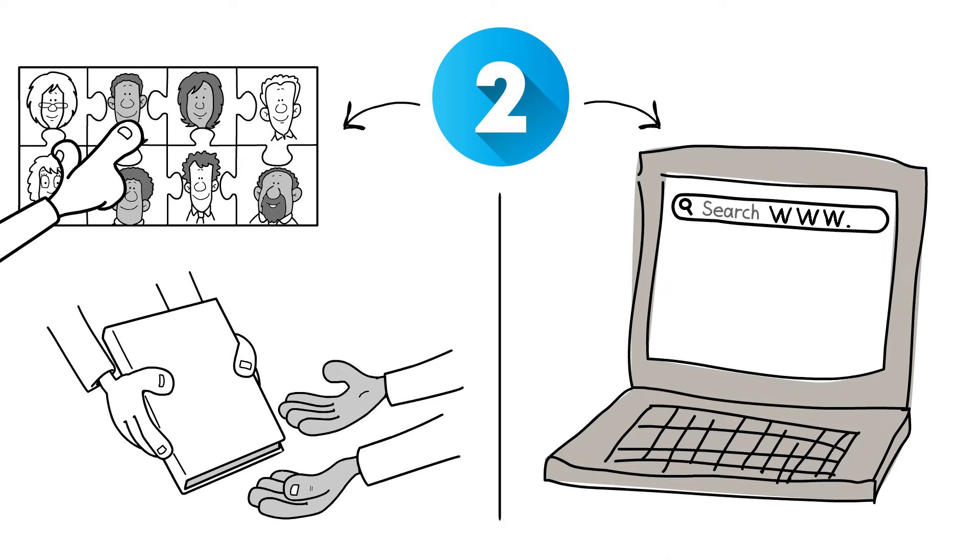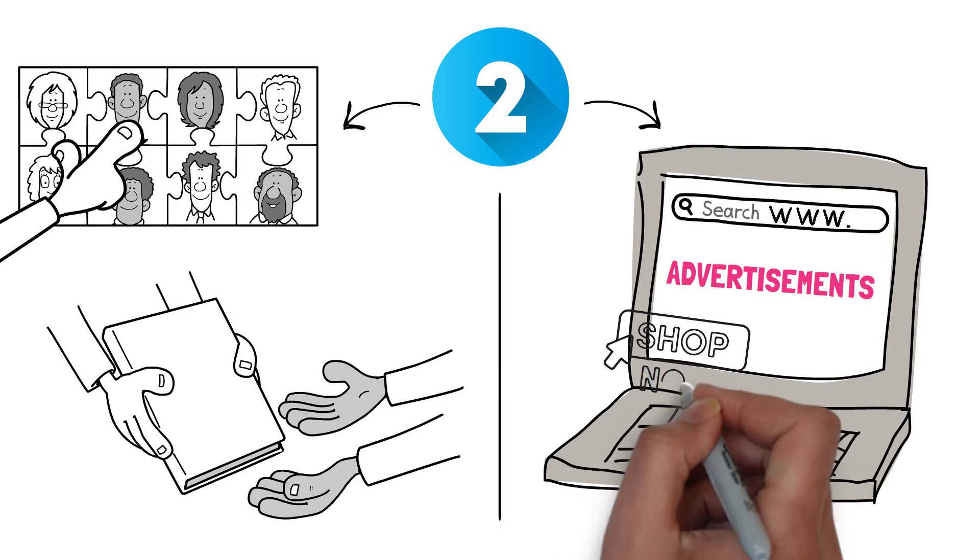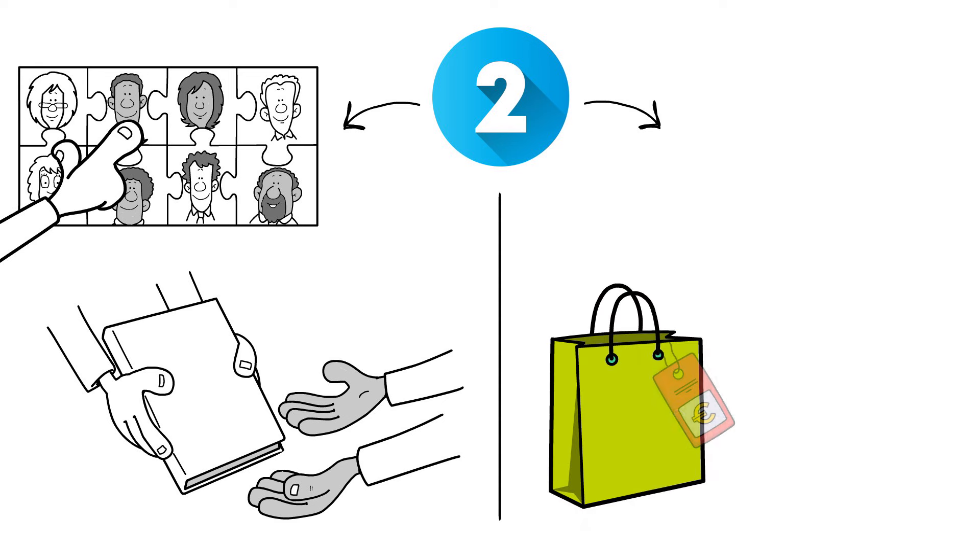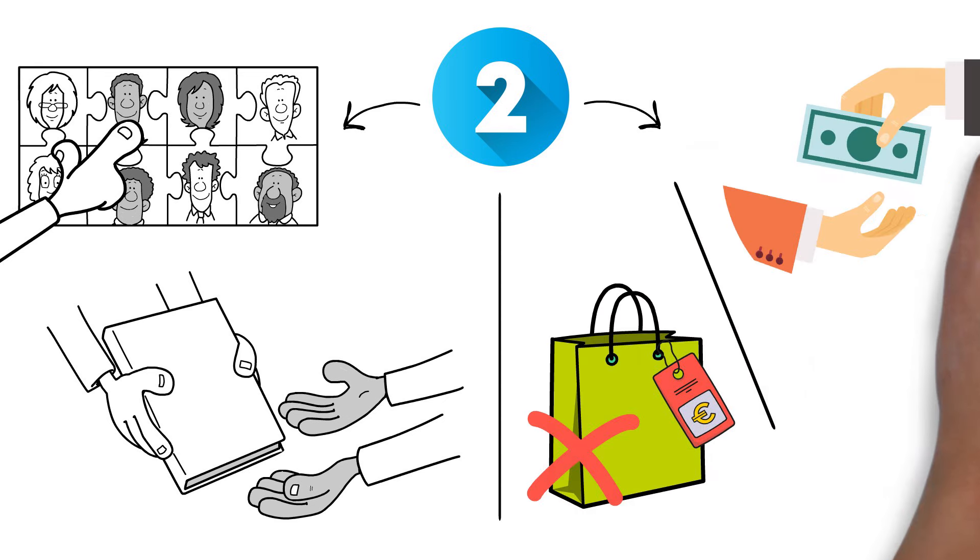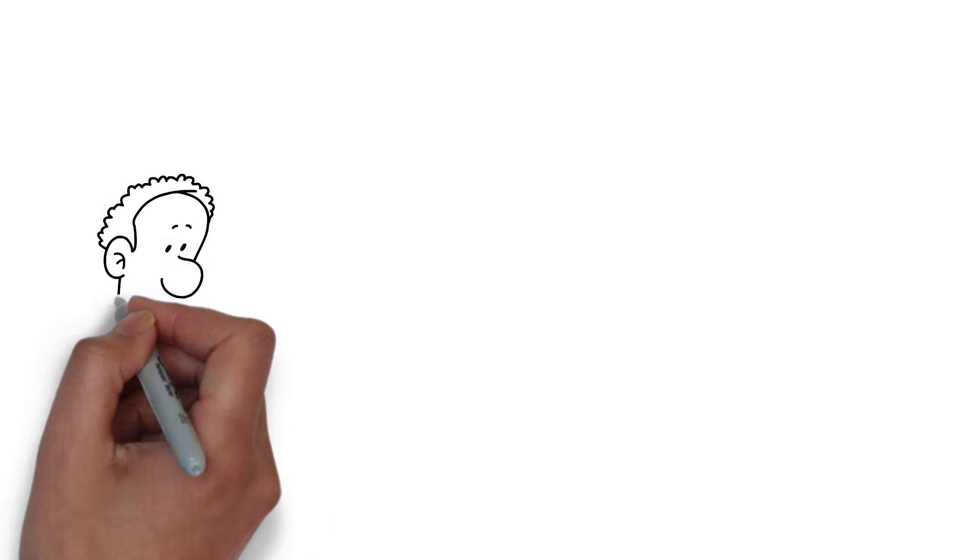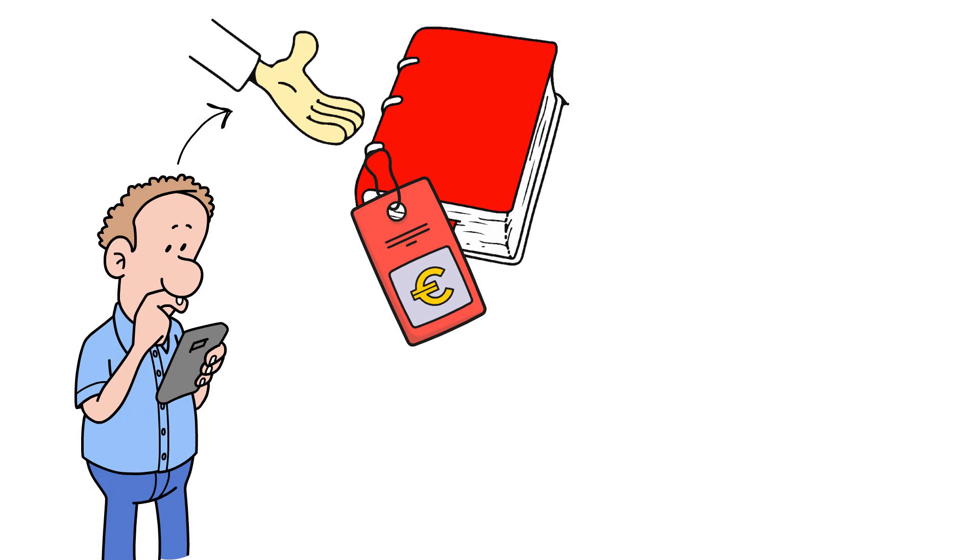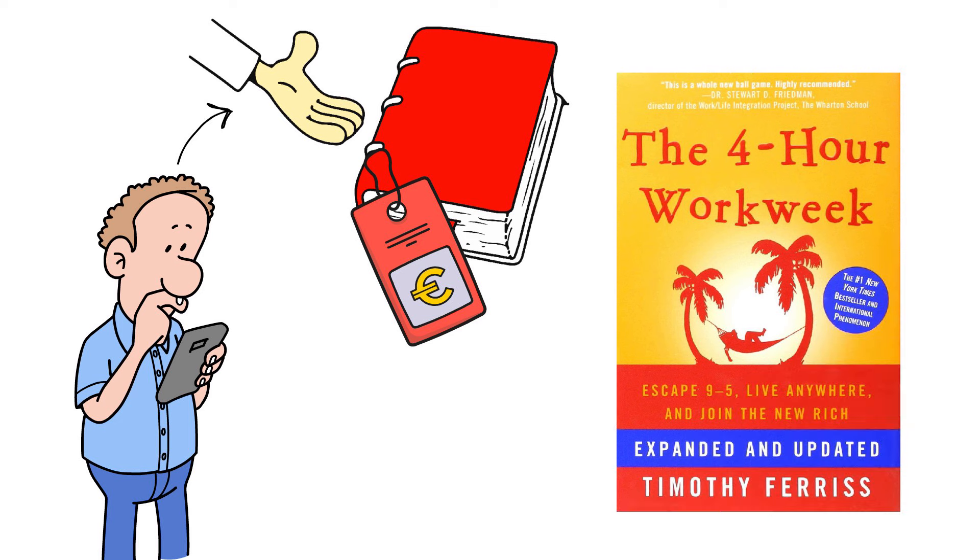Second, he launched Google advertisements to see which title would generate the most clicks on the purchase button. Even though he wasn't selling anything and the buyers weren't paying anything, he determined which title provided him the highest chance of selling the book. The winner, as we now know, was The 4-Hour Workweek.